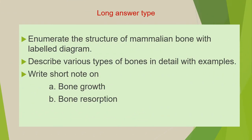The third category of questions are long answer type questions which are explanatory in nature and you have to answer in detail along with diagrams, flow charts and tables. The first question is: enumerate the structure of mammalian bone with labelled diagram. Next: describe various types of bones in detail with examples. Third: write short notes on the following — A) bone growth, B) bone resorption.